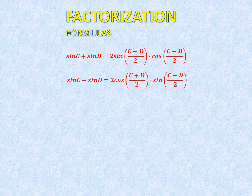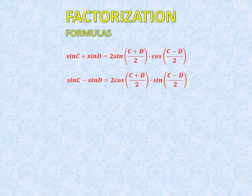Sin C minus sin D is equal to 2 cos((C plus D) upon 2) into sin((C minus D) upon 2).